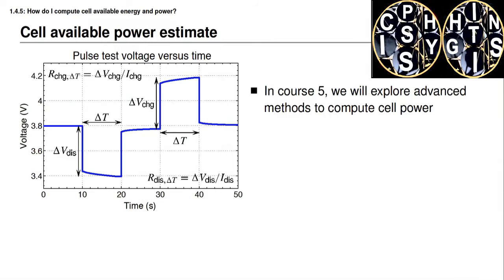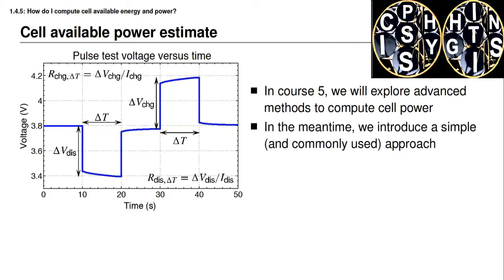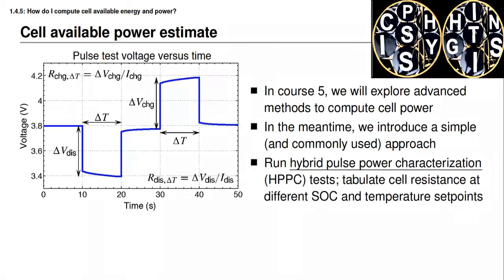There are some good methods and some poor methods for computing power. In this lesson I will share with you one simple method to compute available power that's actually quite commonly used, but it does have some limitations, and so in the fifth course of the specialization you will learn some better methods. This method is known as the hybrid pulse power characterization, or HPPC method. It's based on performing a very simple test on a battery cell in the laboratory and measuring some quantities from that test that we later use to calculate power. The figure shows a profile of cell voltage versus time.